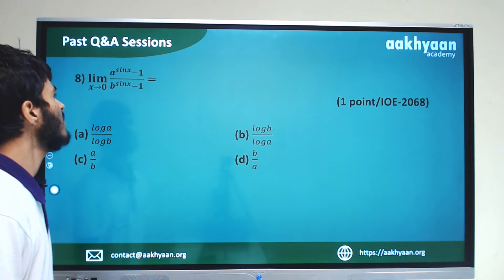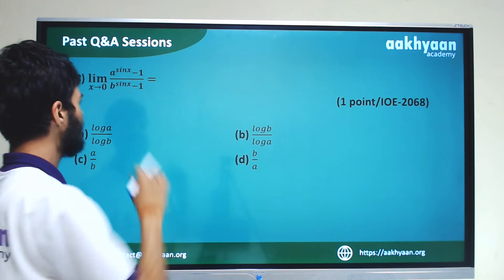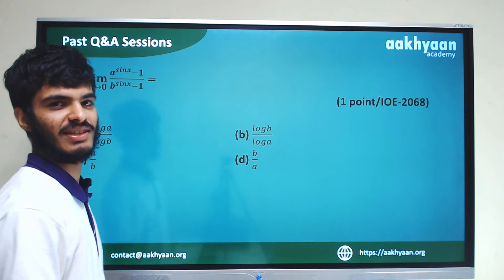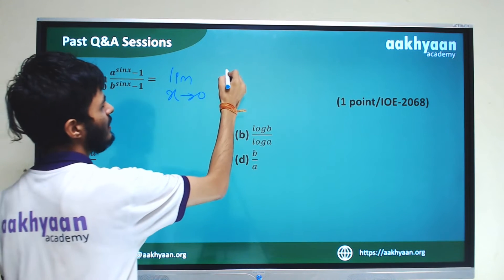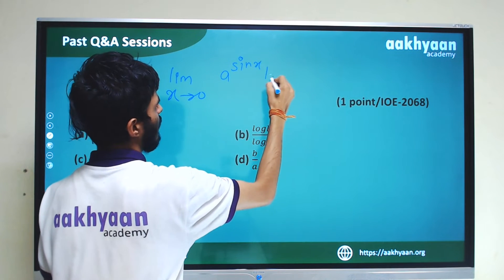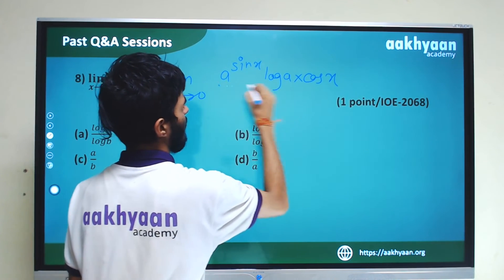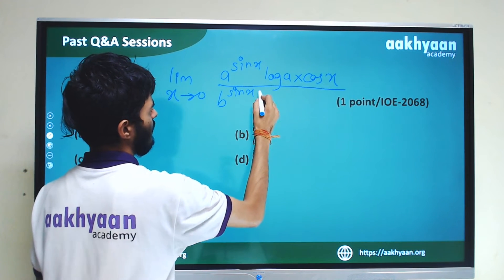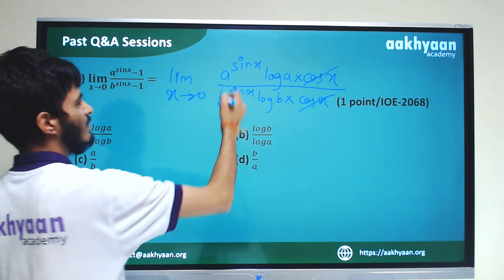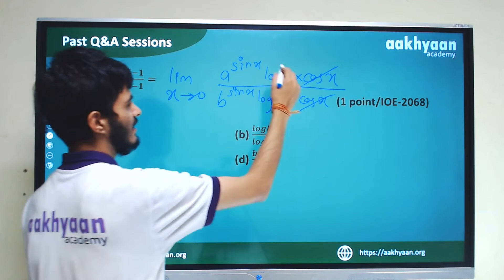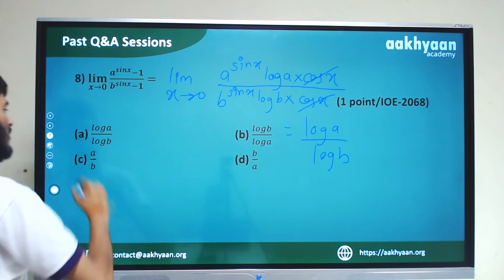The limit x tends to 0 equals (sin x minus 1) divided by the denominator. We can use L'Hôpital's rule: taking log A times the derivative of sin x and log B times the derivative of sin x equals cos x. Putting x equal to 0, sin 0 equals 0. So A is our correct answer.